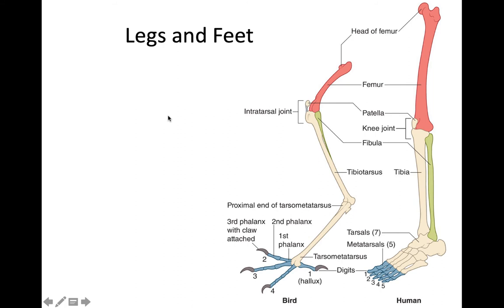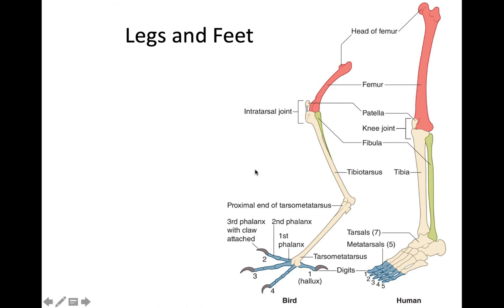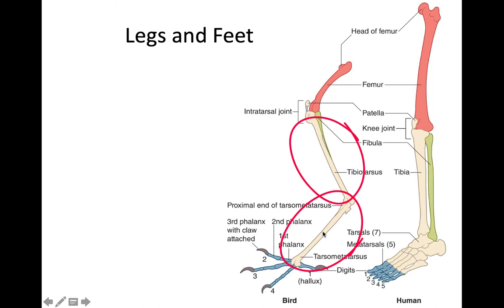Moving on to legs and feet: birds do have a femur, and the distal part is where the knee joint is. You generally don't see this because it's tucked up underneath the body. Most of what you see as far as the leg of a bird is associated with the tibiotarsus — a relatively longer bone — and the tarsometatarsus. The tibiotarsus also has an attachment of a very slender, basically vestigial fibula. When the ankle joint bends down, it allows the bird to maintain a nice center of gravity, so females can sit on a clutch of eggs without toppling over.